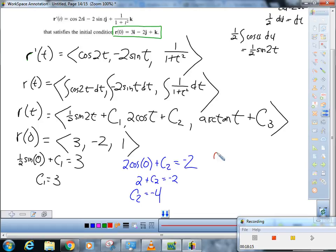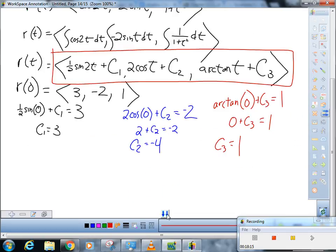And finally, arctan of 0 plus C3 must equal 1. Well, arctan of 0. Tangent is sine over cosine. What value is tangent 0 for? Well, it's when sine is 0, so it's 0. So this is 0 plus C3 equals 1. So now we know C3 equals 1. And now we can take this and write our final answer as r of t equals 1 half sine 2t. I leave it in terms of t. I don't pop the 0 back in. The 0 is just useful information to solve for our Cs. So plus 3, comma 2 cosine of t minus 4, comma, arctan of t plus 1.